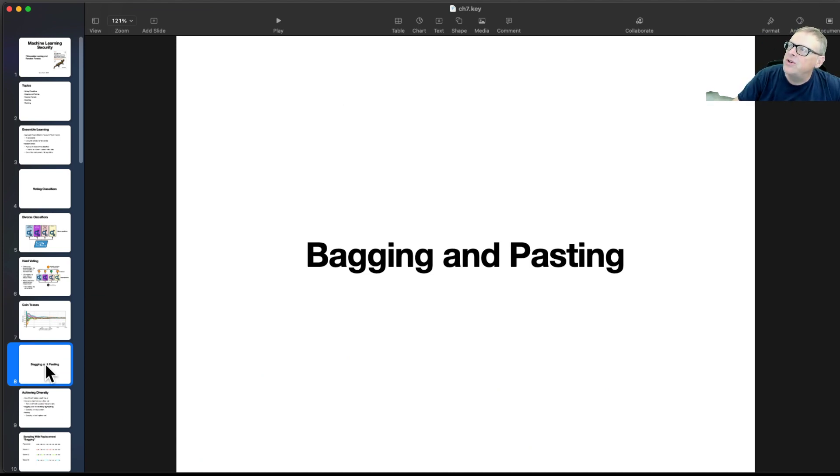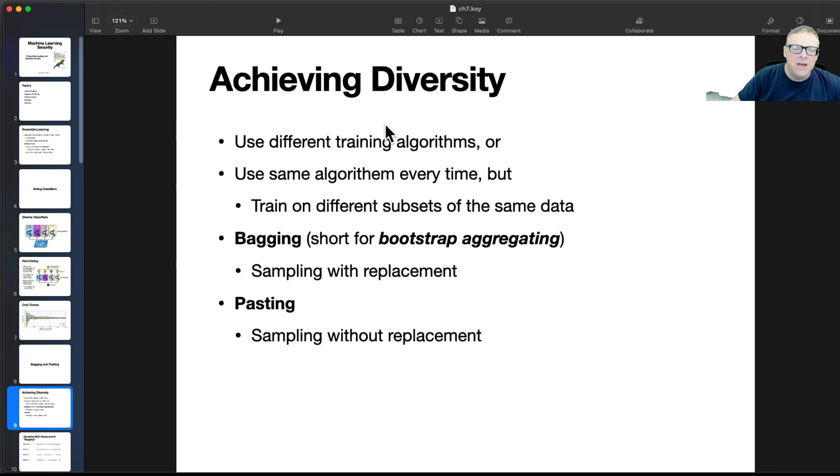Now, to train a whole bunch of different models on the data, you try to achieve diversity. Now, one way to do it is use different algorithms. One is a support vector machine, one is a random forest, and so on. That's one way to do it. Another way to do it is use the same algorithm every time, but train on different subsets of the data. And there's two ways to do it. You can sample with replacement or without replacement.